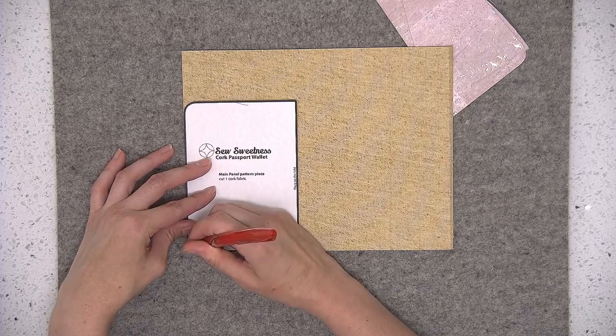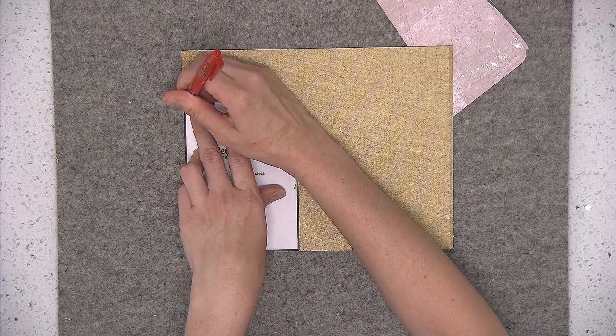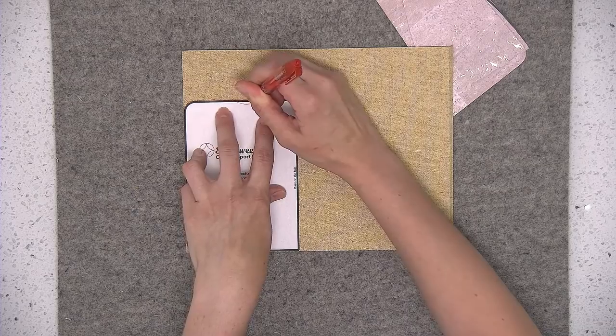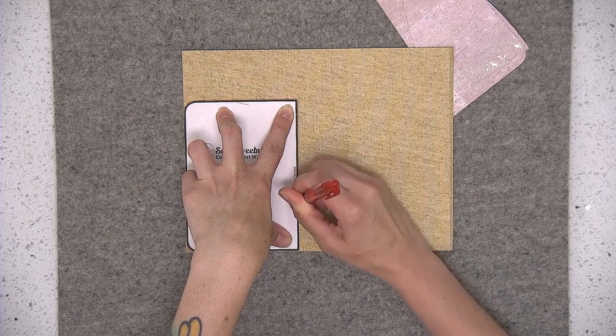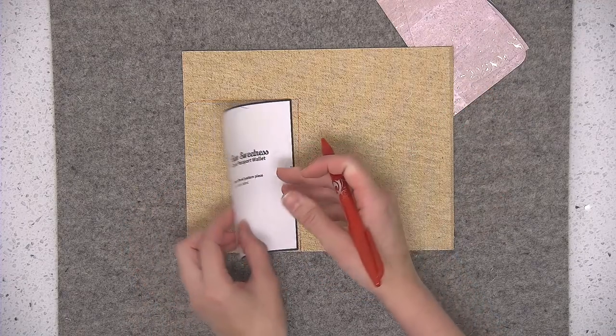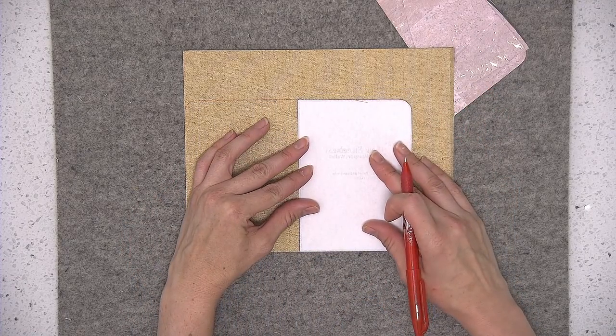I'm just using my fabric pen and I'm going to draw around the outer edge of the pattern piece and I'm also going to draw the straight line where the fold edge is because I'm going to use that straight line to flip my piece over and draw the other half.